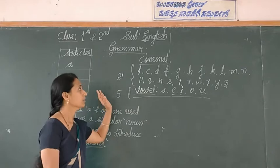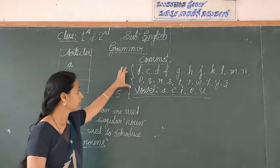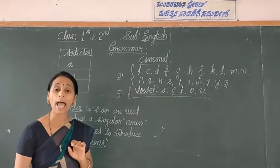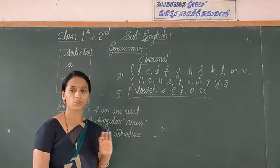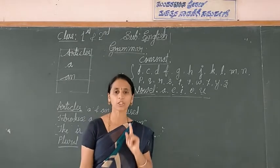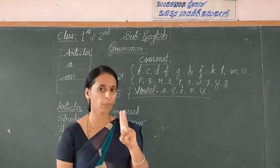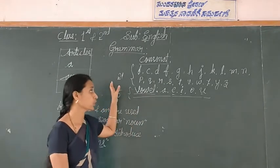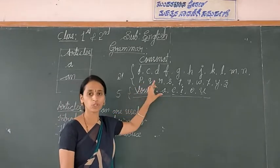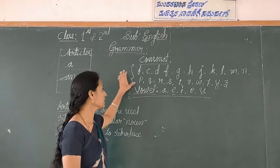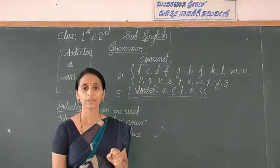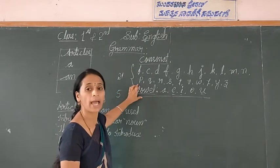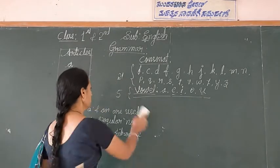So in consonants we use 'a', and in vowels we have to use 'an'. Once again children: there are 26 letters in English alphabets. We divide them into two parts - consonants and vowels. Vowels have five vowels and consonants are 21. In vowel sounds - A, E, I, O, U - we have to use 'an'. In consonants, in 21 letters, we have to use 'a'.